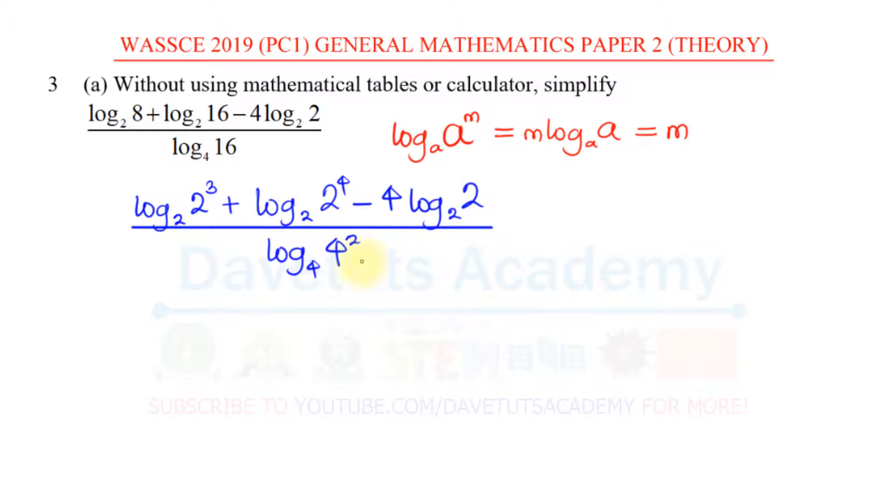Once we have this, you can just apply the rule that since this base and the log we are looking for are the same, the 3 can come out and this will just be 1. So if I'm bringing the power forward, I'm going to have 3 multiplied by log to base 2 of 2, plus here I'll bring the 4 down, 4 multiplied by log to base 2 also of 2.